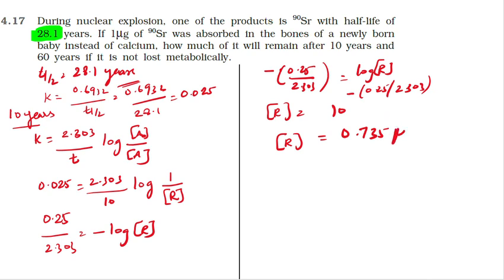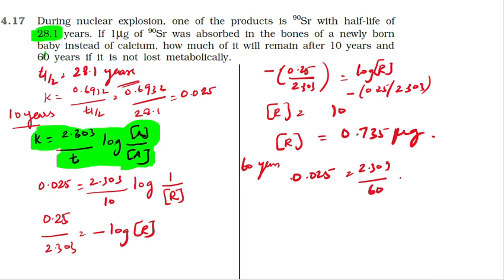After 60 years, using the same formula: k value 0.025 equals 2.303 divided by 60, times log of 1 by R.